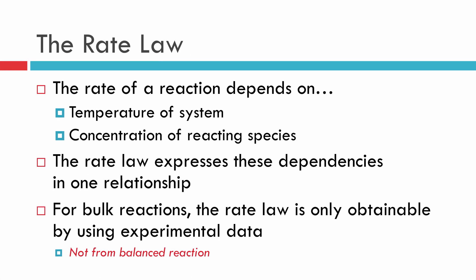So what we're going to be doing is looking for a thing called the rate law, and we know that the rate of a reaction—that is how fast the reaction happens—will depend on the temperature of the system and the concentration of the reacting species. This rate law that we're going to be looking for will express both of the dependences on temperature and concentration in one relationship. And by relationship, I mean an equation.